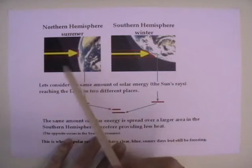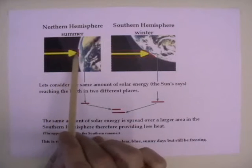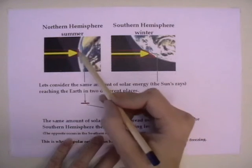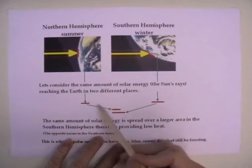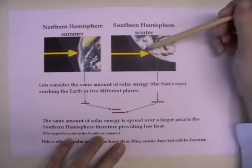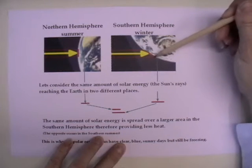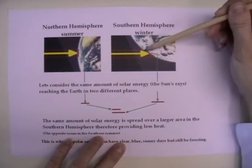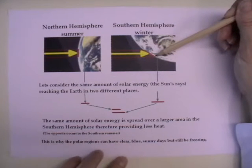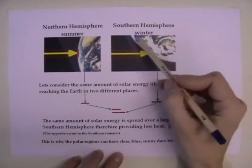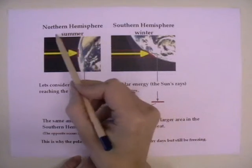This diagram shows the concentration of sunlight on the northern hemisphere during our summer. You can see the sun is falling on a specific area, as shown by the line. At the same time, the sun's light is much less intense in the southern hemisphere — it falls over a much wider area, and because it's spread over a wider area, it's much less intense. Therefore, they're experiencing winter while we experience summer.